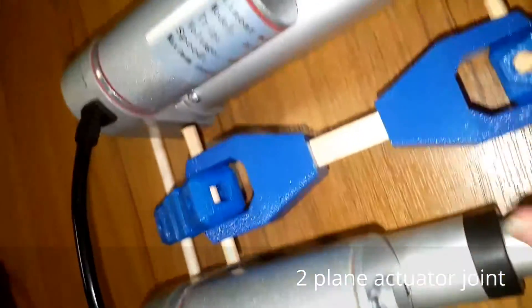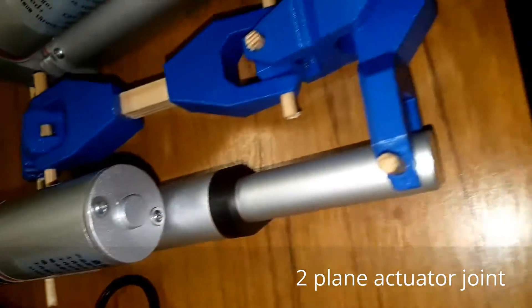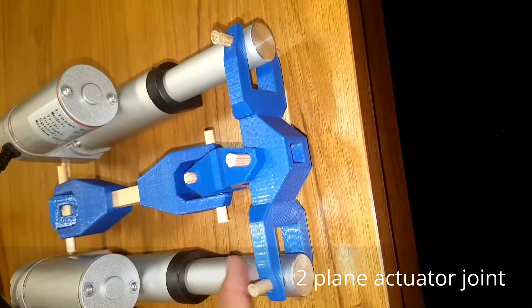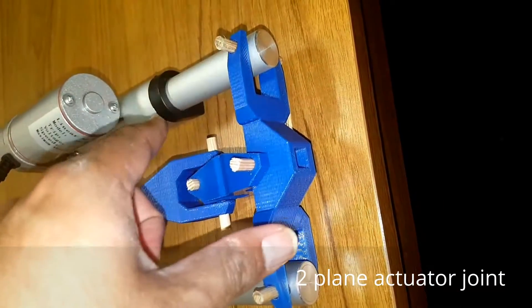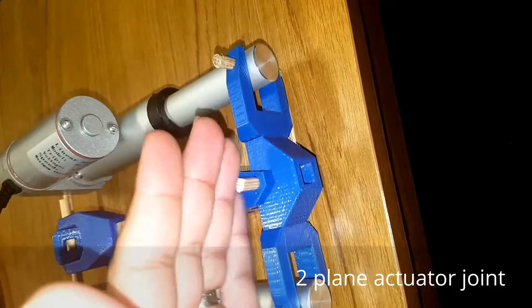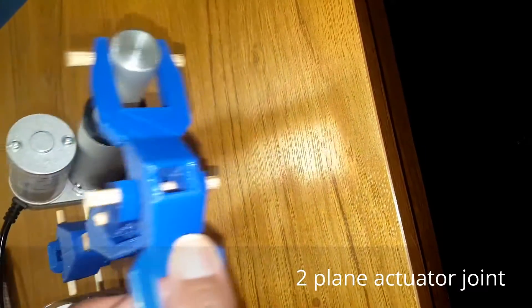There are two actuators involved. And they allow differential movement here and here which enable this to pivot. And if they're moved together, they cause movement in this plane.